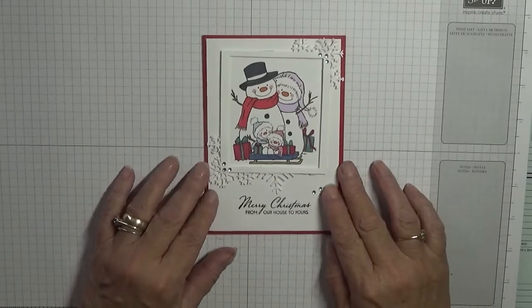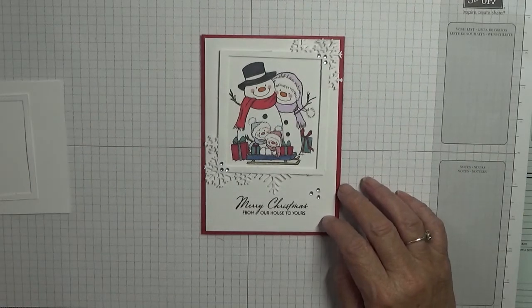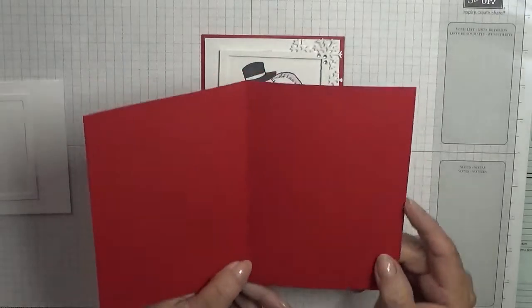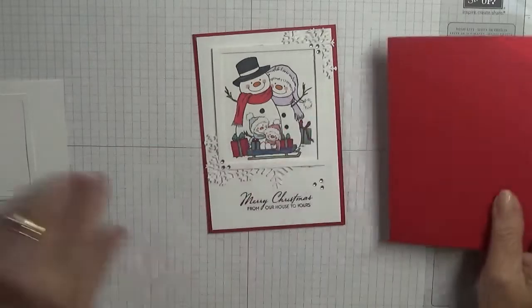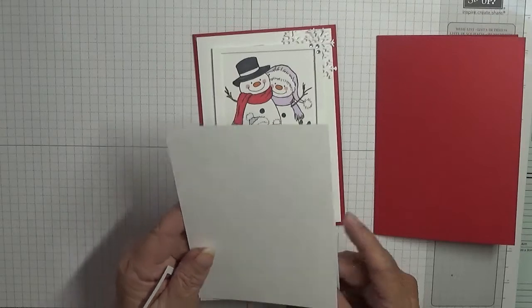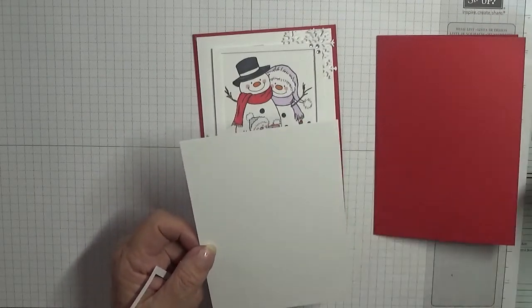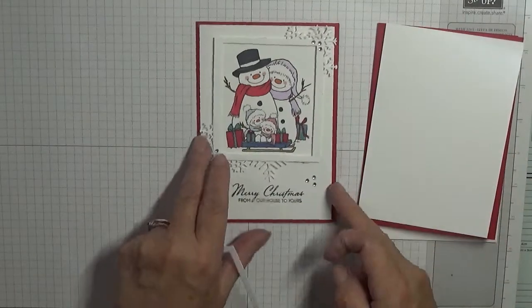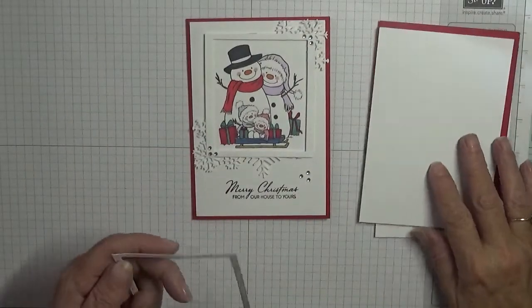To make this card I used a base of real red cardstock, eight and a quarter by five and seven eighths, scored at four and one eighths, folded in half and burnished. And two pieces of white cardstock, both at five and five eighths by three and seven eighths, one for the inside and one for the front. I've also cut myself a frame.